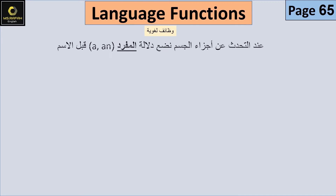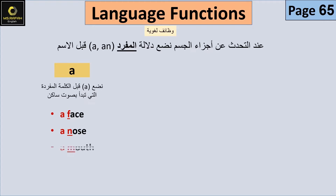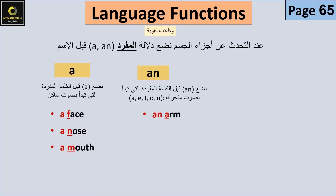Now let's see the language functions. When talking about body parts, place 'A' before singular words that begin with a consonant sound. For example: a face, a nose. And use 'AN' when the word begins with a vowel sound. For example: an eye.